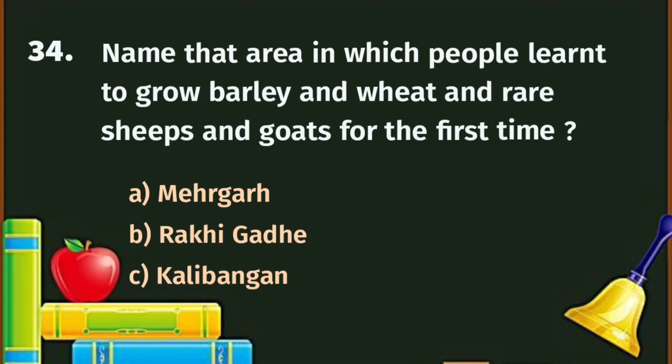Question number 34. Name the area in which people learned to grow barley and wheat and rear sheep and goats for the first time. A. Mehargarh, B. Rakhi Garhi, C. Kalibangan. The correct answer is A - Mehargarh, which is in Pakistan.